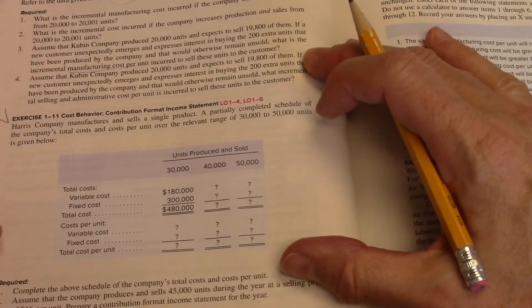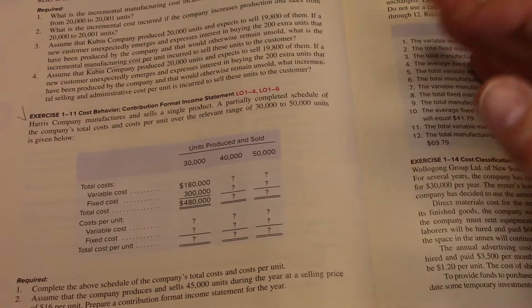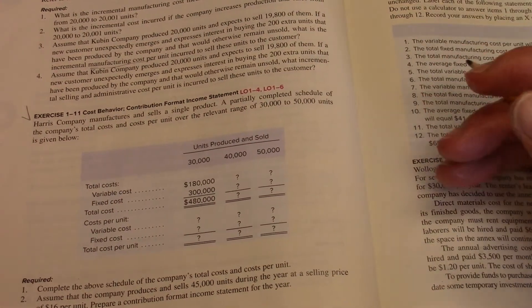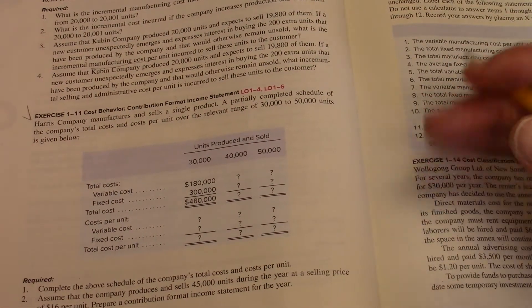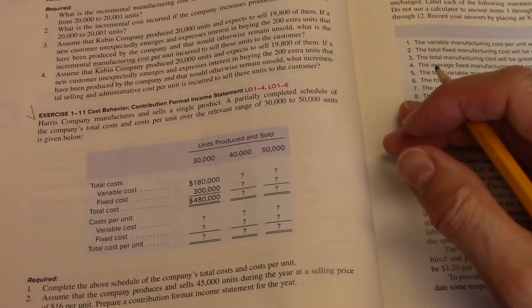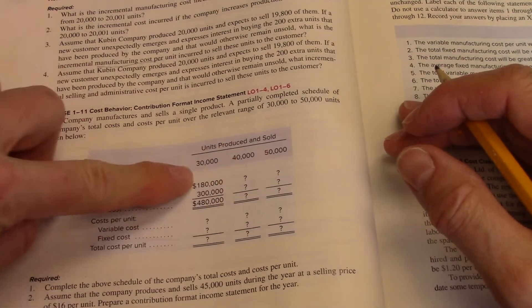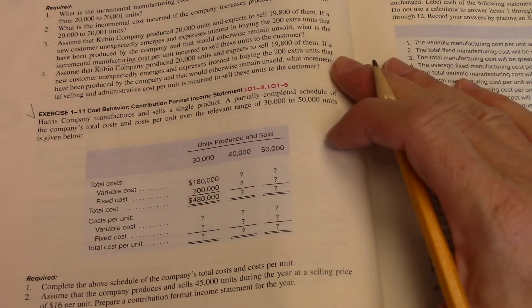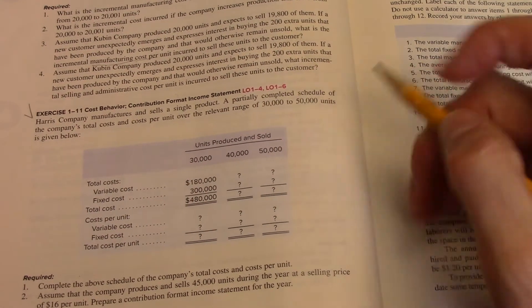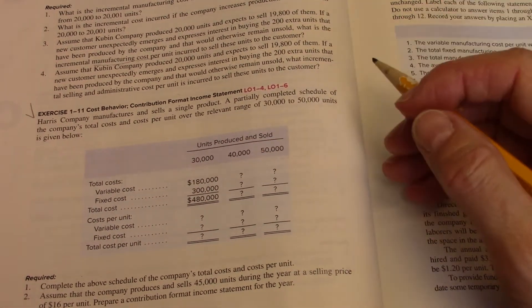So with this problem we're just going to do a little calculating of cost per unit, total cost, that kind of thing. And we're going to do it under several different circumstances, different units produced and sold.